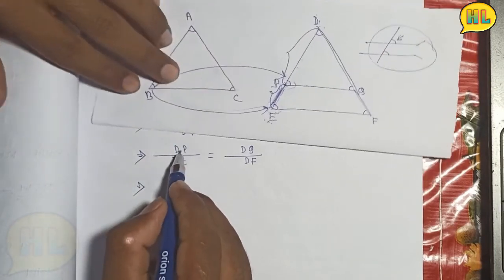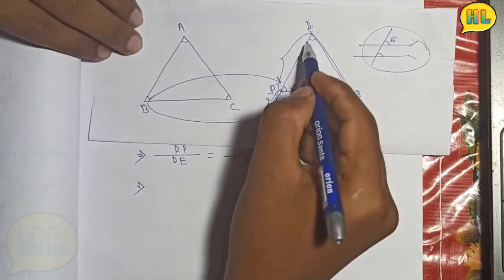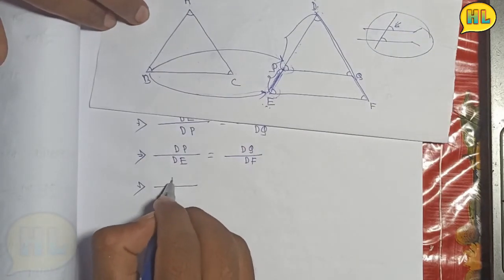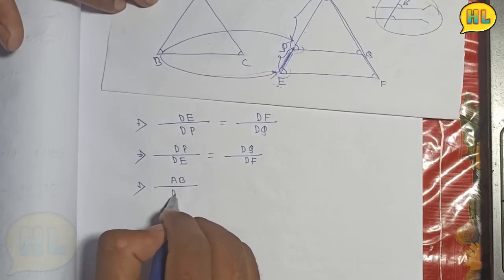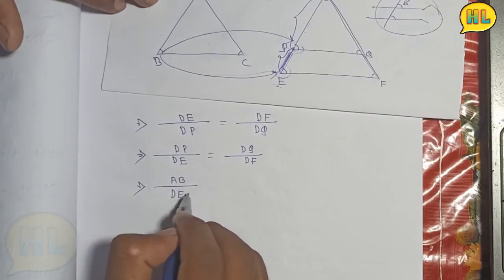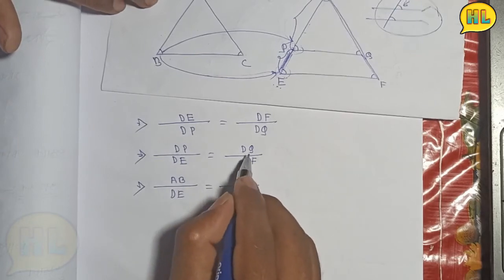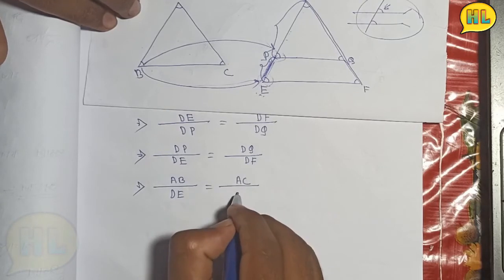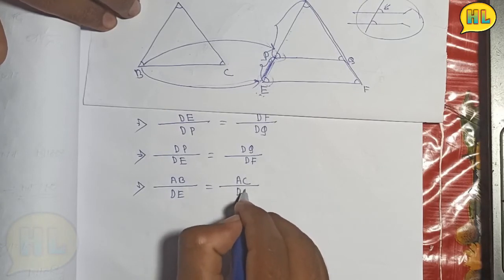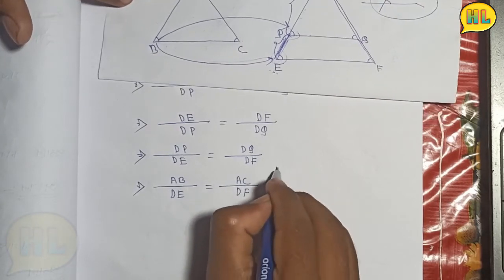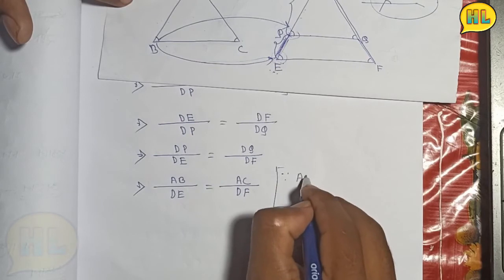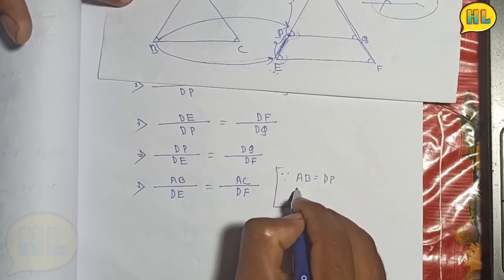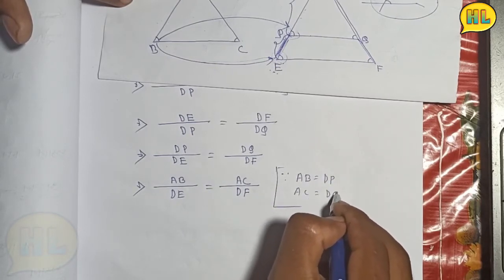We will see, if you need to give the DQ, DQ bar is equal to person in DQ. For example, why should we address the K? So, this is AB, DP and AC, DQ.